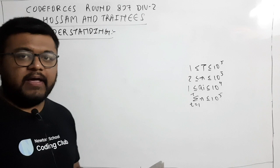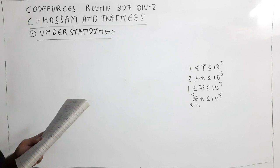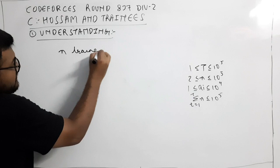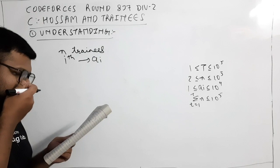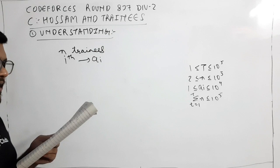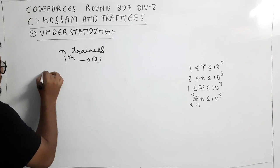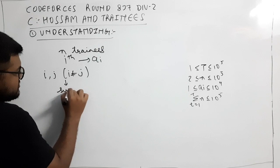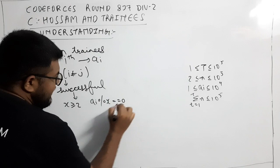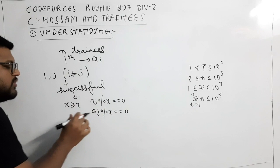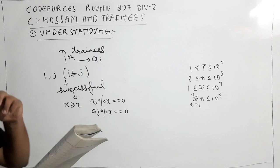Let's start by illustrating the question. Awesome has N trainees. He assigned a number A[i] to the i-th trainee. A pair of i-th and j-th trainees where i is not equal to j is called successful if there is an integer X where X is greater than or equal to 2, such that X divides A[i] and X divides A[j] — meaning X is a common factor of both, greater than or equal to 2.